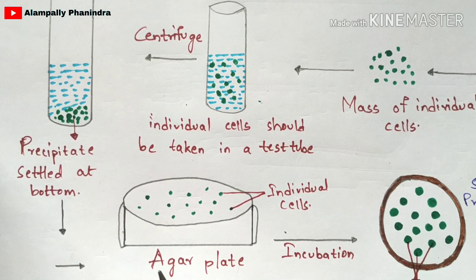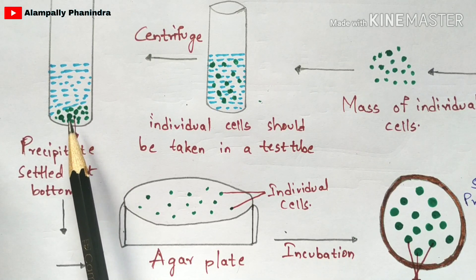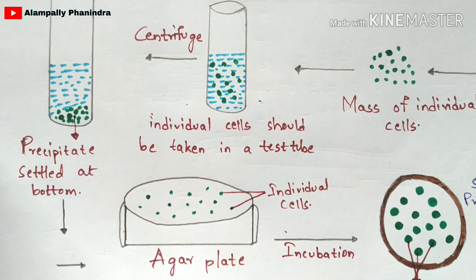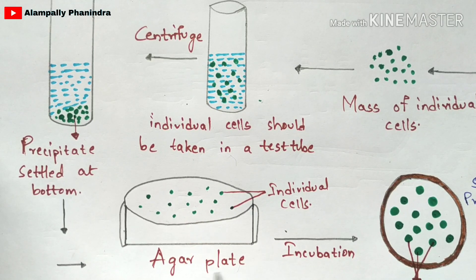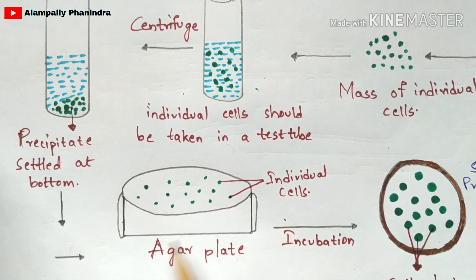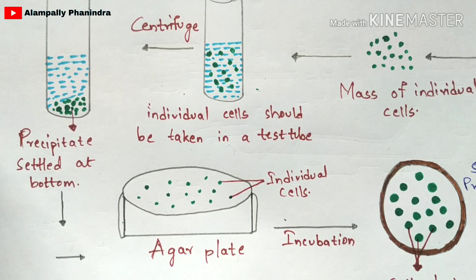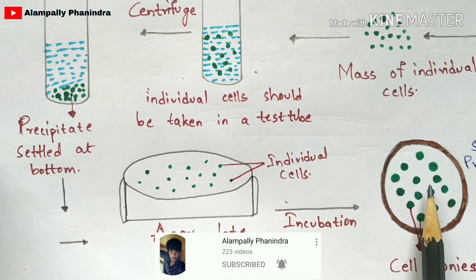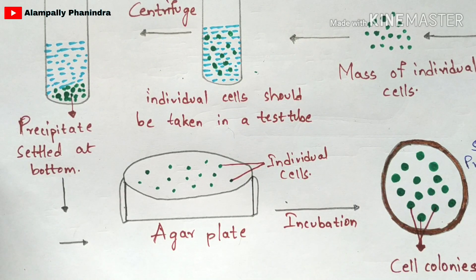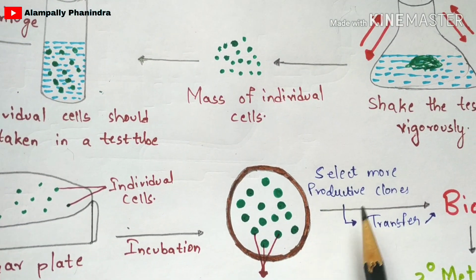In the next step, take an agar plate — place agar solution in a petri plate to form an agar plate. The precipitate formed after centrifugation will be placed on this agar plate. The green dotted structures shown in the diagram are the individual cells placed on the agar plate. After this, you incubate the agar plate, and after some time the individual cells will develop into cell colonies, growing larger in size.